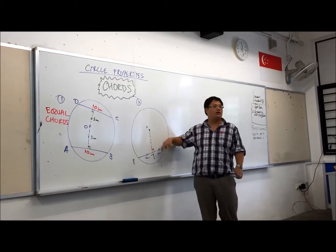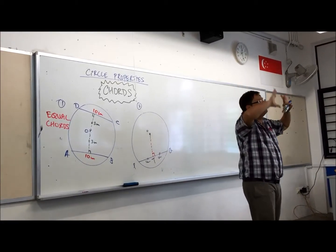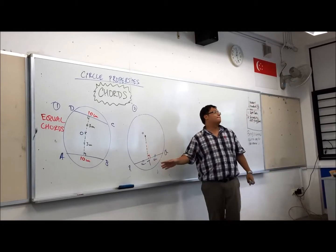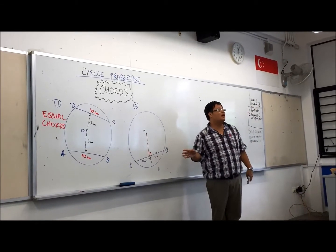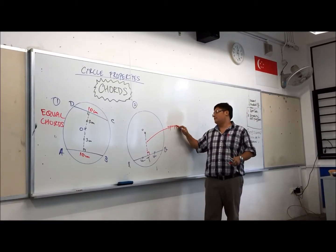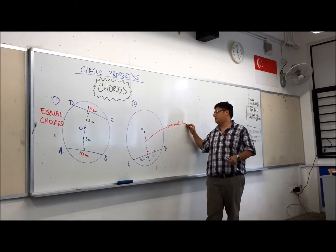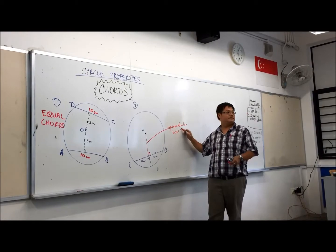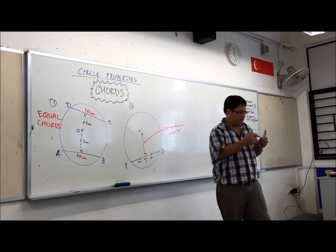What is this OT called? What is this line OT known as? It's known as the perpendicular bisector. Remember, this line is known as the perpendicular bisector. You're with me.